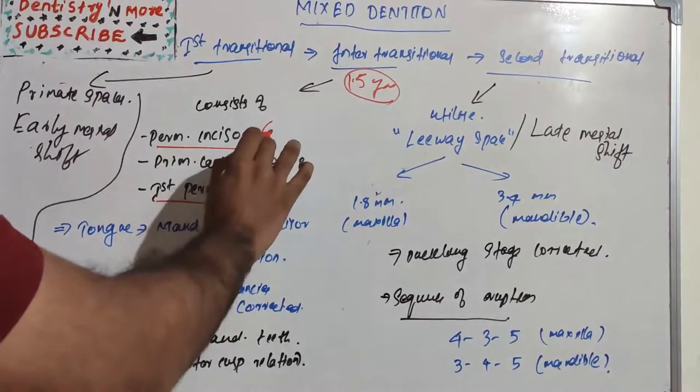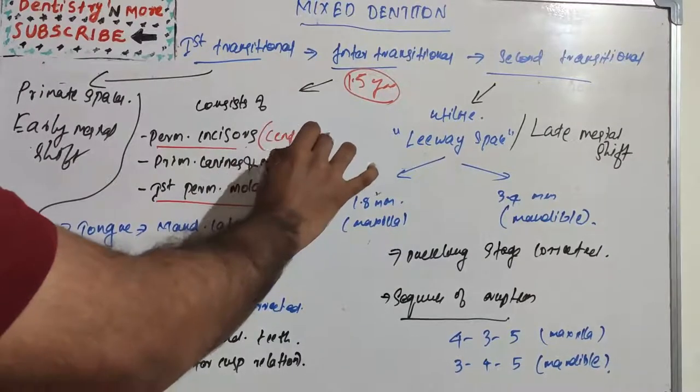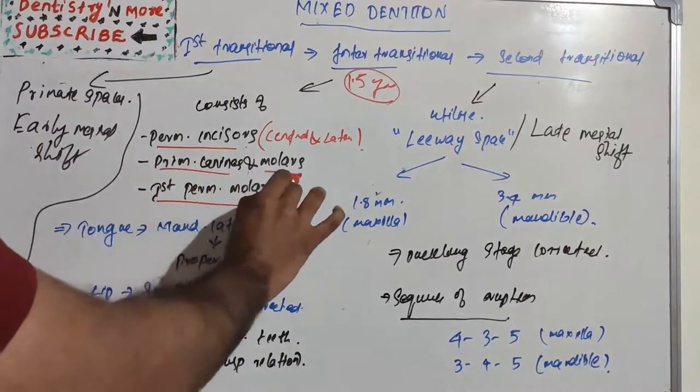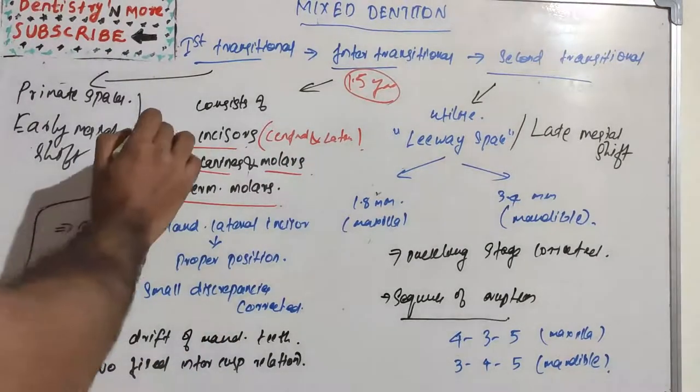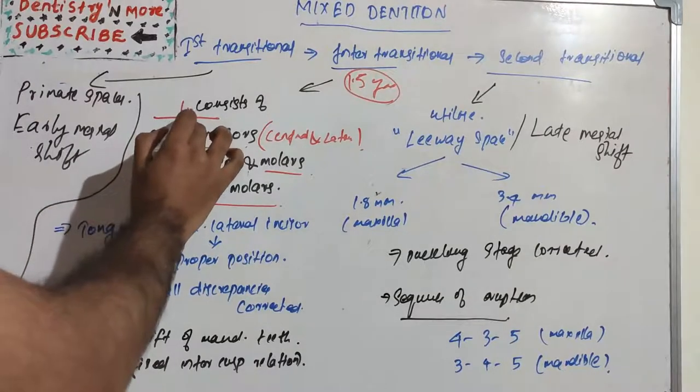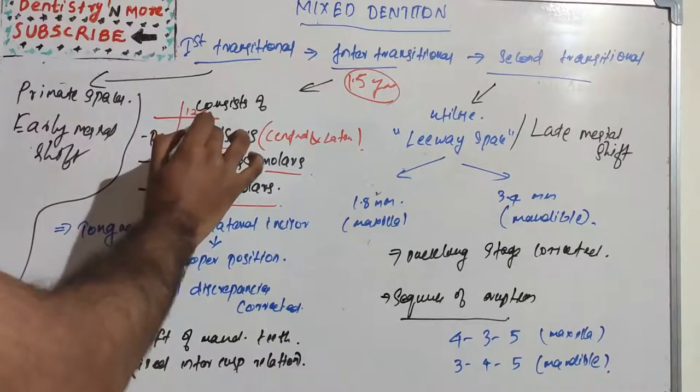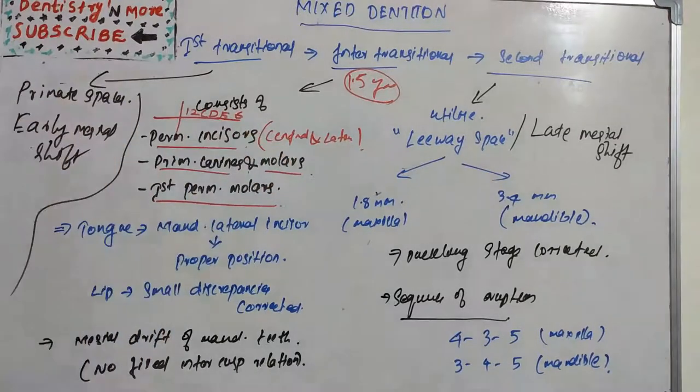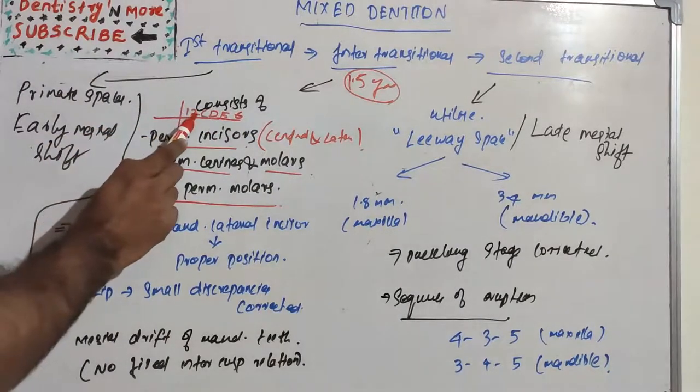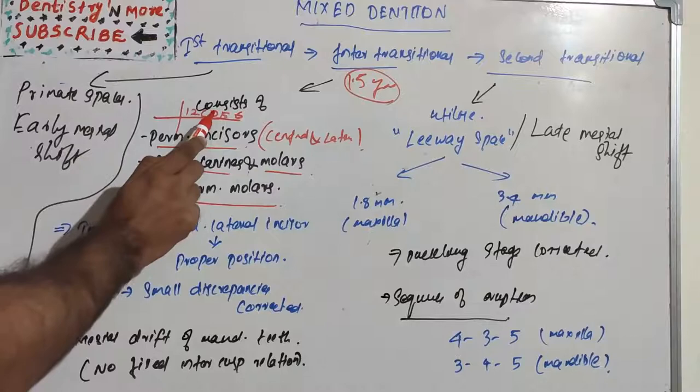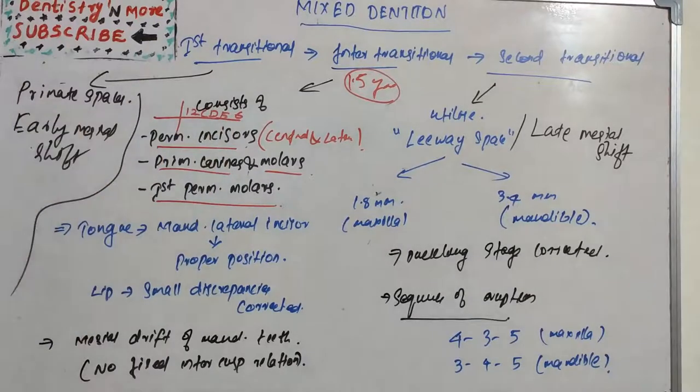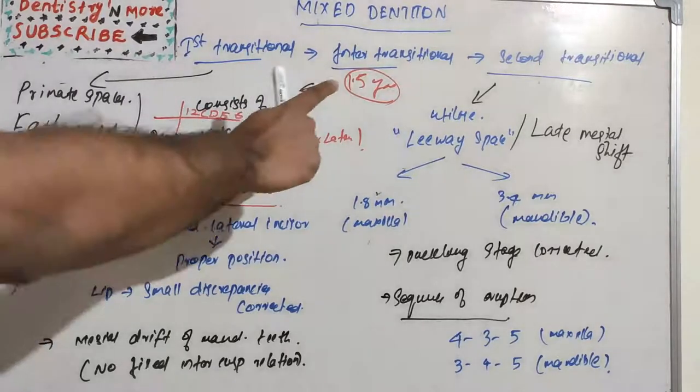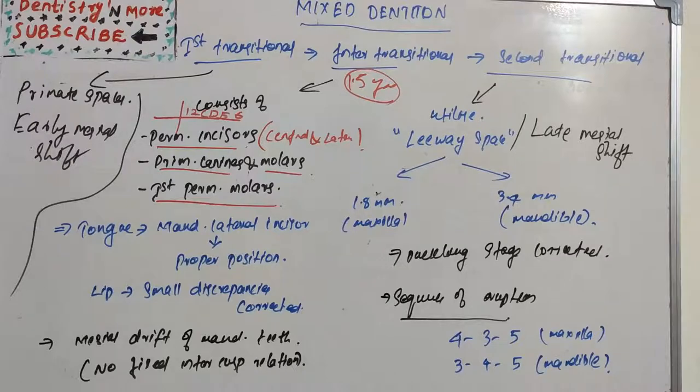During this time the mouth consists of permanent incisors, first permanent molars - that includes both central and lateral - and primary canines and primary molars. So it will be like this: one, two, C, D, E, and six - central permanent, lateral permanent, deciduous canine, deciduous first molar, deciduous second molar, and permanent first molar. This period lasts around 1.5 years.